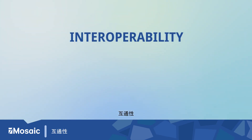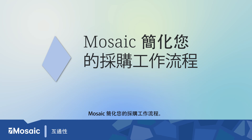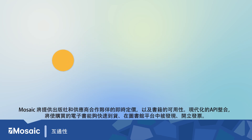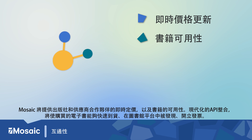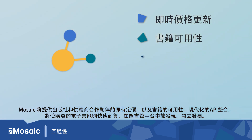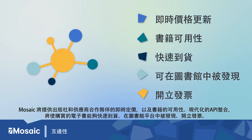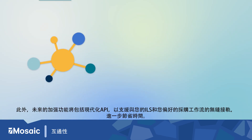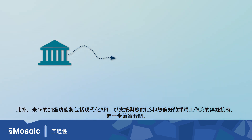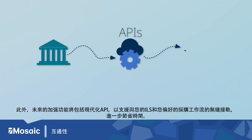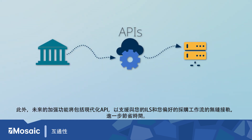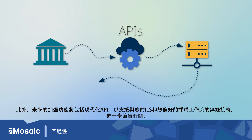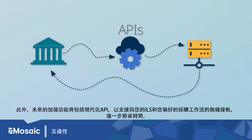Interoperability. Mosaic simplifies your acquisition workflow. Mosaic will provide real-time pricing and title availability from supplier partners, and modern API integrations will enable quick fulfillment, discovery, and invoicing of purchased ebooks. Future enhancements will include modern APIs to support seamless integration with your ILS and preferred acquisition workflow to save you time.